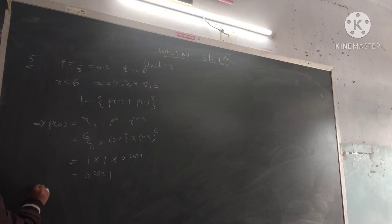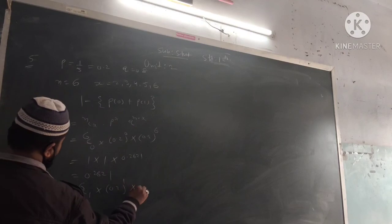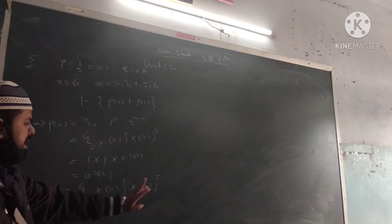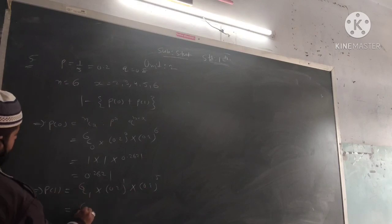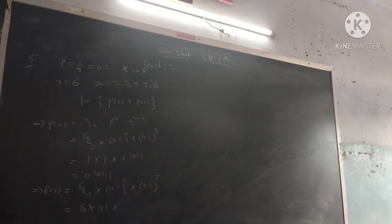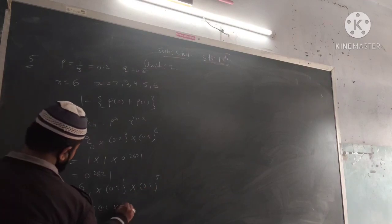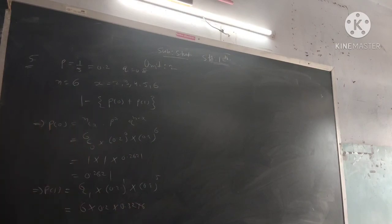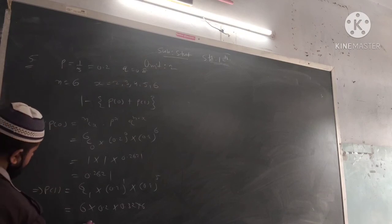For P(1): 6C1 times 0.2 to power 1 times 0.8 to power 5. 6 times 0.2 times 0.3276 equals 0.3932.